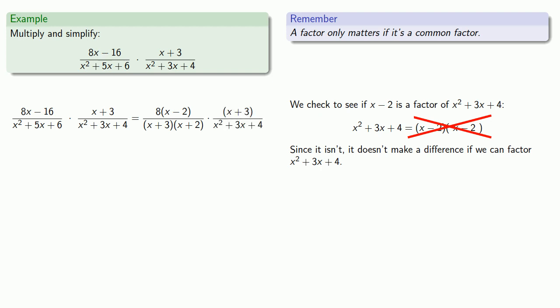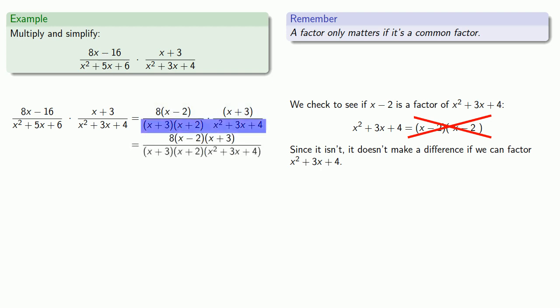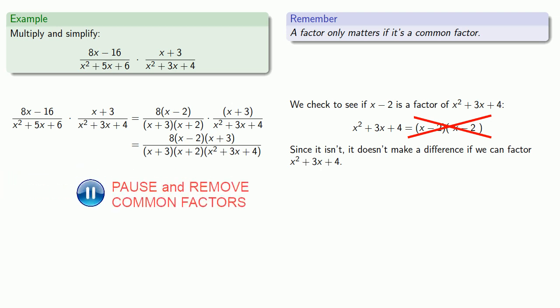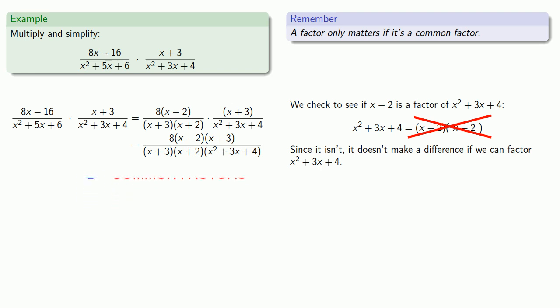Now we multiply numerator by numerator and denominator by denominator, remembering that factored form is best — so we won't actually expand the product, just run the factors together to indicate the multiplication. Then we remove any common factors and leave our answer in factored form.